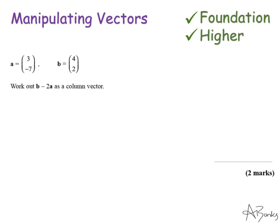Here's the other skill that can be tested, and this is adding and subtracting and multiplying vectors. You've probably seen these column vectors before. We use them when we do transformations of shapes and when we're translating a shape from one place to another on a grid. These are the same vectors we're talking about here. This says, work out B minus 2A. So I'm just going to write that out. B minus 2A. B is just that column vector there, so I can write (4, 2).